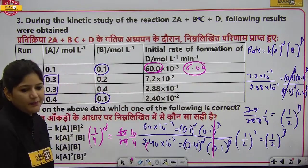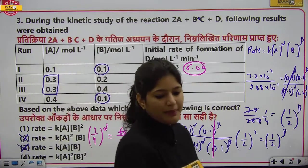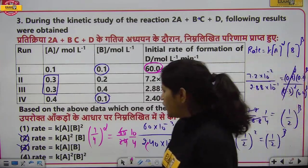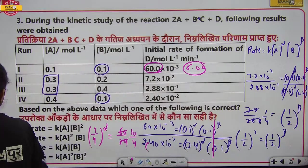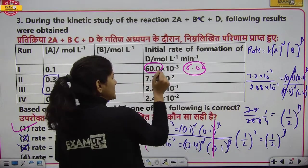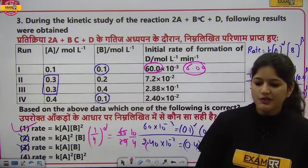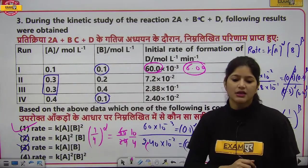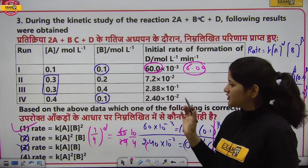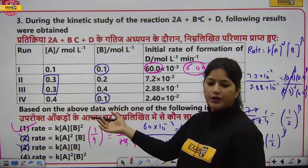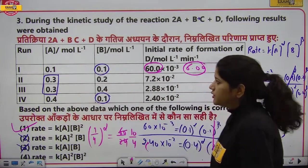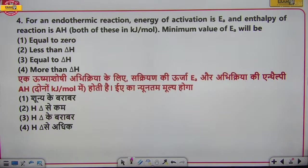Printing mistake की correction: value 60 नहीं, 6 × 10⁻³ होनी चाहिए। तब (1/4)^α = 1/4, α = 1। Beta = 2 निकल चुका है। तो rate law expression: rate = K[A]¹[B]²। First expression सही है, तो answer first option है।